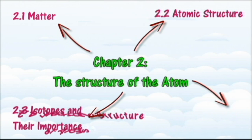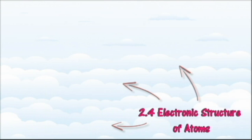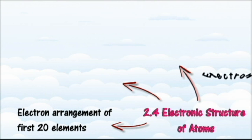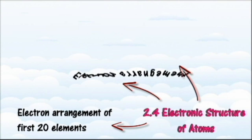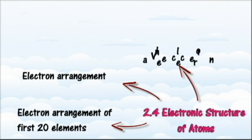In section 2.4 we will learn about the electronic structure of an atom. At the end of this section you should be able to: describe the electron arrangement of elements with proton number 1 to 20, draw the electron arrangement of an atom in an element, state the meaning of valence electron, and determine the number of valence electrons from the electron arrangement of an atom.